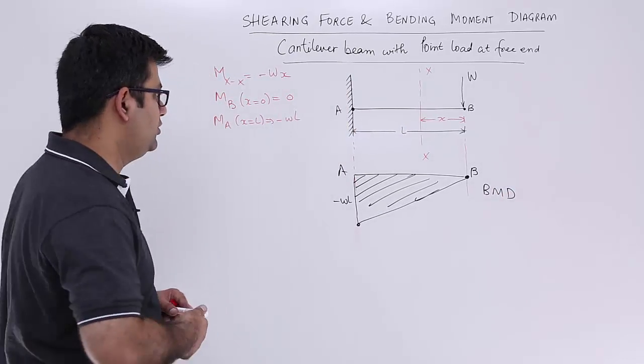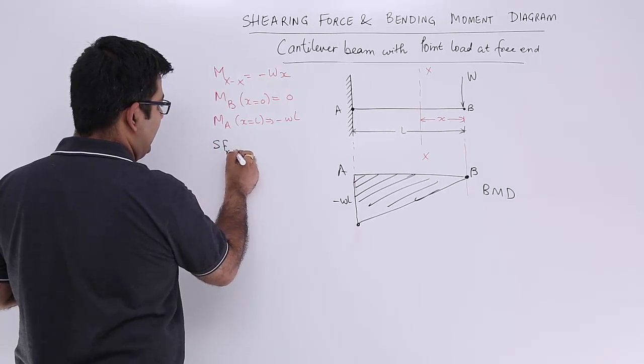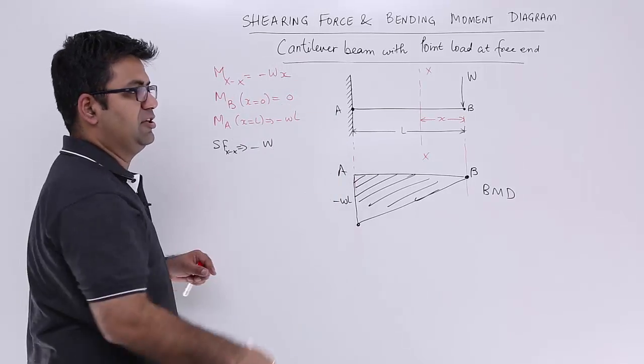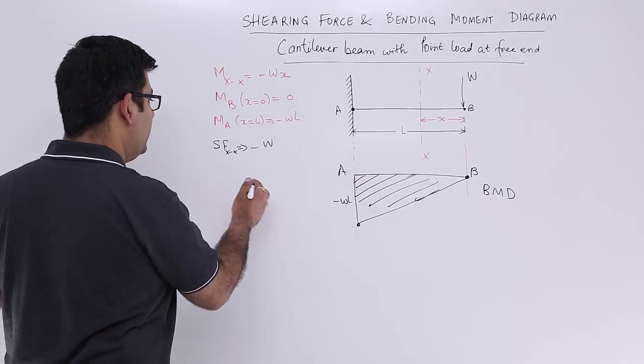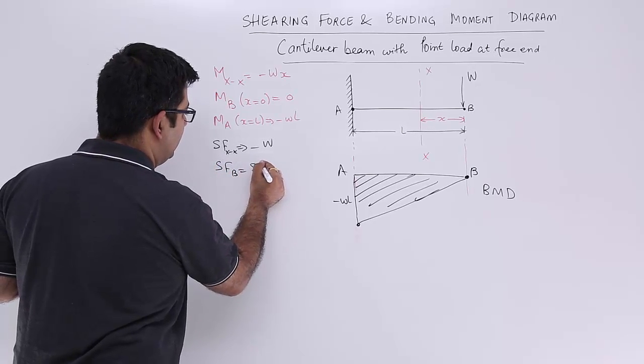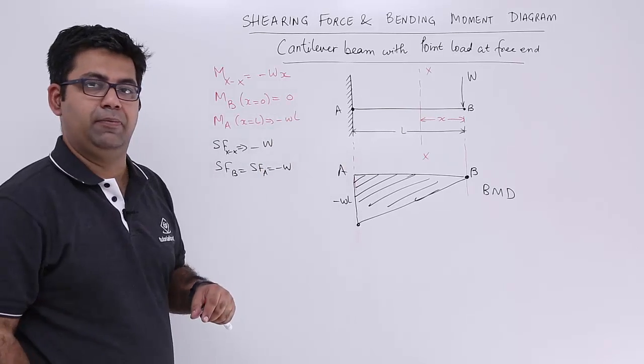Now let us find out the shear force diagram. So sf at section xx is nothing but minus w because it is in the downward direction. Similarly, this will be same at b and same at a, which is minus w.